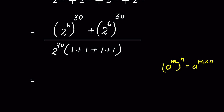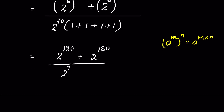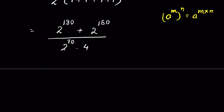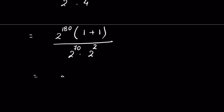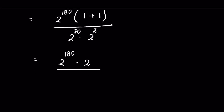Applying that identity, the numerator becomes 2 to the power 180 plus 2 to the power 180, and the denominator is 2 to the power 70 times 4. We take 2 to the power 180 as common in the numerator, giving 2¹⁸⁰ × (1 + 1), upon 2⁷⁰ × 2², where 4 is written as 2 squared.